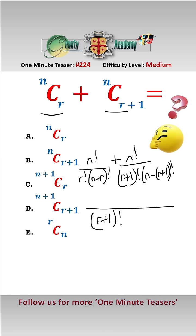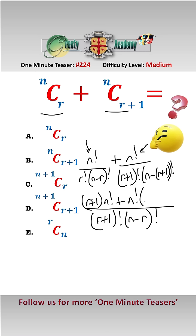Putting this over a common base of R plus 1 factorial times N minus R factorial, we need to multiply the first term by R plus 1, giving us R plus 1 times N factorial, and multiply the second term by N minus R, giving us N factorial times N minus R.